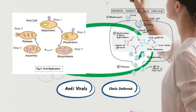Certain viruses can also inject unique viral proteins into the host cell. These proteins help the virus hijack the cell's machinery — they fight off host cell proteins that might compete with the virus, and essentially force the cell to give up making its own proteins and replicating its own DNA, redirecting all its energy into replicating the viral genome instead.